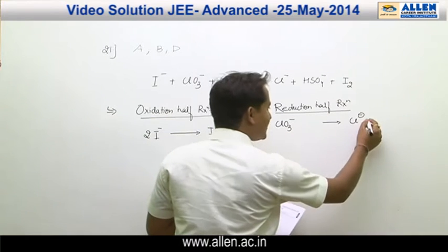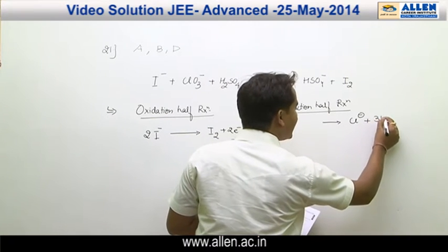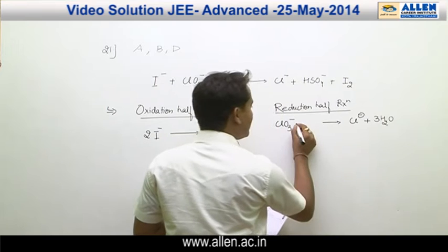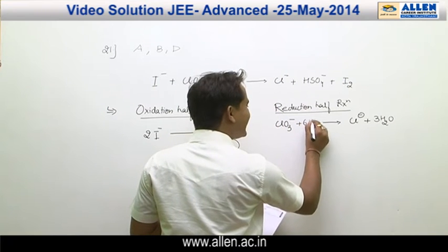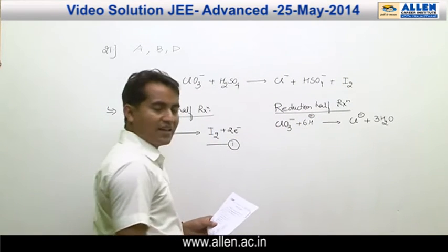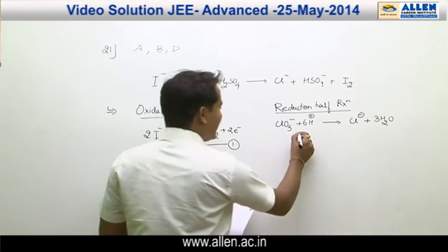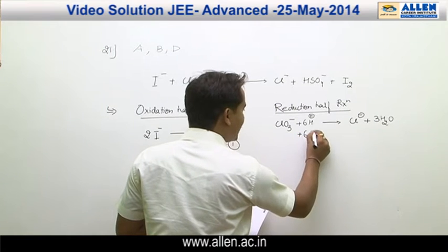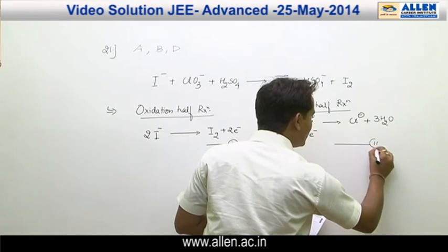Now, here is 3 oxygen, so we add 3 H₂O plus 6 H⁺. To balance the charge, 6 electrons should be added, equation 2.